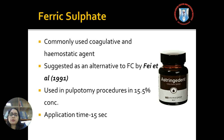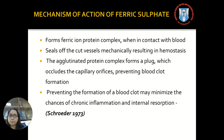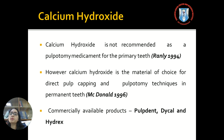Ferric sulfate is a commonly used coagulative and hemostatic agent, suggested as an alternative to formocresol by Fi et al. in 1991. Its application time is 15 seconds, used at a concentration of 15.5%. Ferric sulfate forms a ferric iron-protein complex which, on contact with blood, mechanically seals off cut vessels resulting in hemostasis. This complex becomes coagulated and forms a plug occluding the capillary orifice, also preventing blood clot formation, minimizing chronic inflammation and internal resorption. Calcium hydroxide is another material used for pulpotomy; however, since it is highly alkaline and there are reports of internal resorption, it is not recommended for primary teeth, but is the material of choice for direct pulp capping and pulpotomy in permanent teeth only.